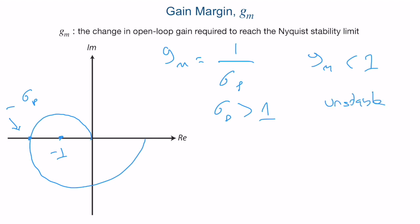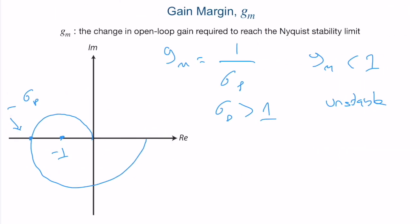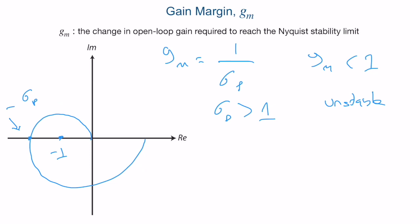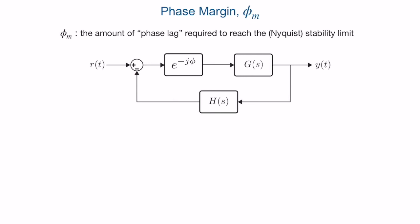Instead of drawing the entire Nyquist plot and checking encirclement, you can look at the gain margin: if it is less than one, the system is unstable. Gain margin — whether larger or smaller than one — gives information about relative stability: how close the system is to the unstable region or how far it remains in the stable region.